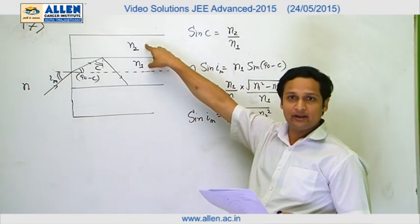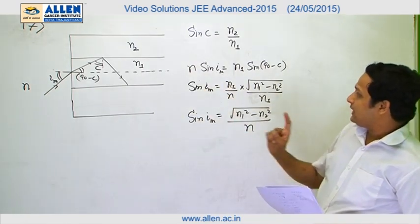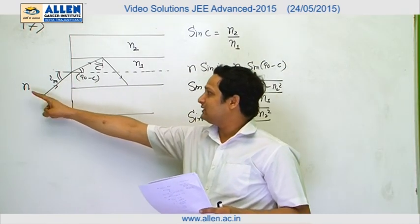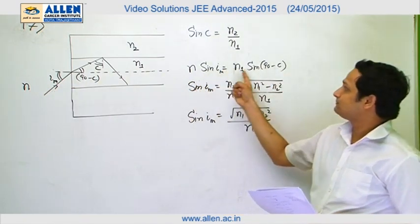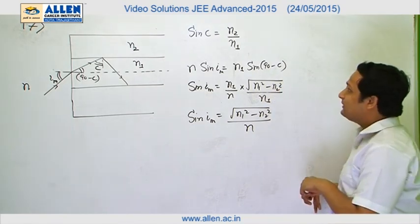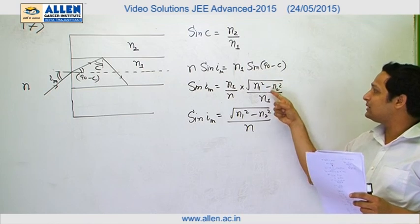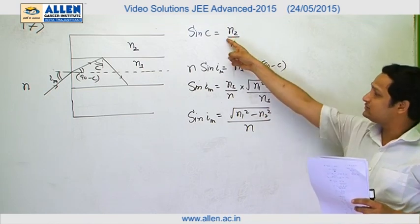N2 is the refractive index of the rare medium, N1 of the denser medium. If we apply Snell's law at the surface, N sin IM equals N1 sin(90 - C). And sin(90 - C) is cos C. And cos C equals √(N1² - N2²) / N1 from this equation.